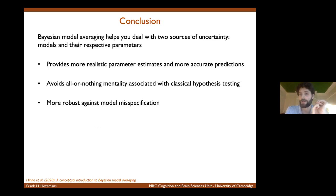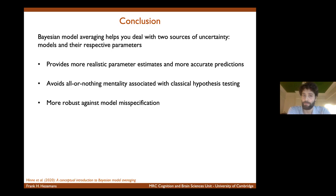Okay, so in conclusion, Bayesian model averaging helps you deal with two sources of uncertainty simultaneously, uncertainty about models and uncertainty about their respective parameters. So in doing so you obtain more realistic and accurate parameter estimates and predictions. You retain all of the models. So you avoid this all or nothing black or white model selection. And you also have a better chance that one of your models is actually the true model of the data. So you're more robust against model mis-specification. If you want more information about this, I would recommend these two papers, particularly the paper on the right here, which is more practical. So it gives you kind of a step-by-step guide on how to do this in freely available software like JASP. Yeah, that's it. Thank you very much.